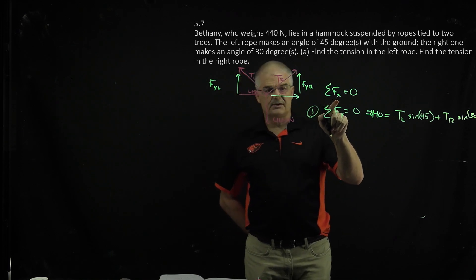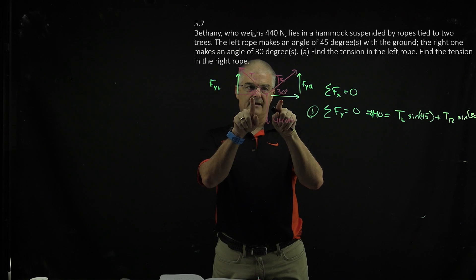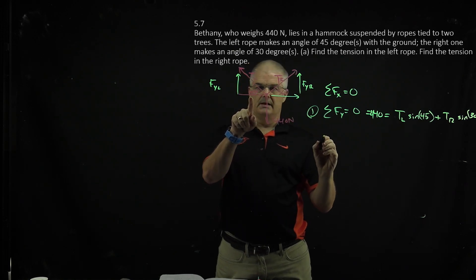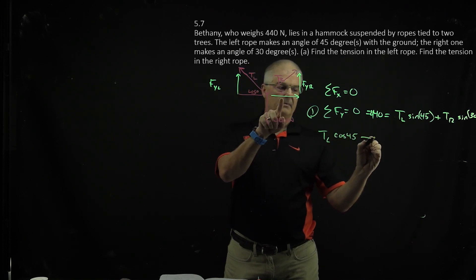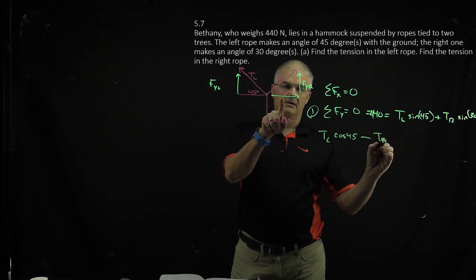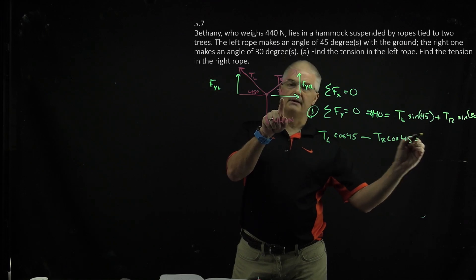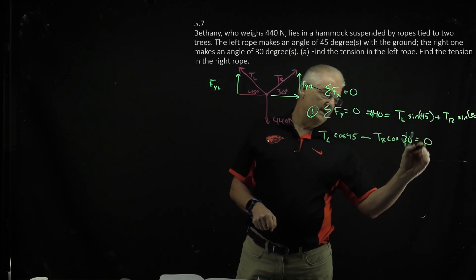For the x direction, this and this have to add up to zero, or this minus this. So I would say tl cos 45 minus tr cos 30—not 45, this should be 30—they add up to zero.